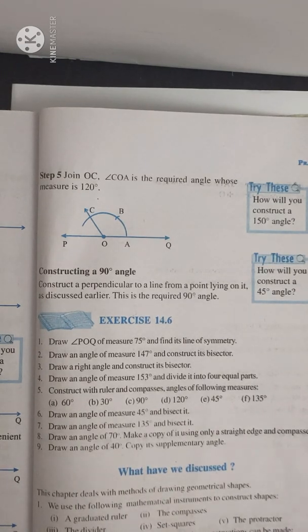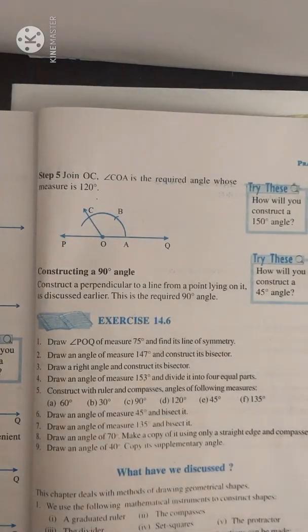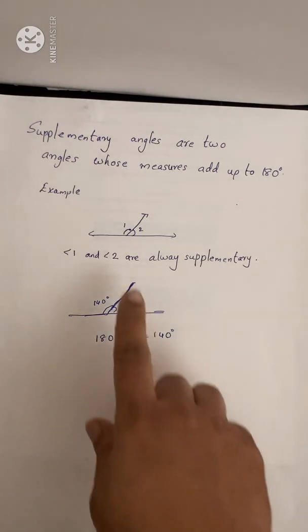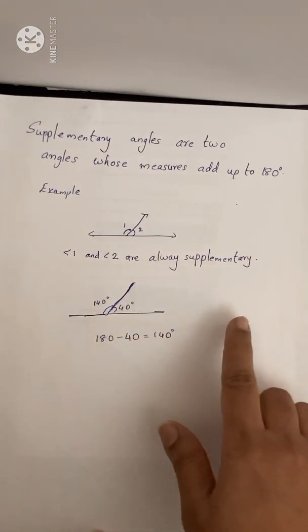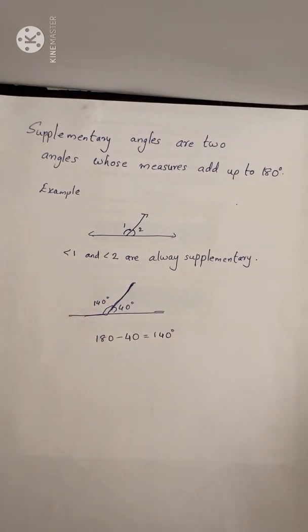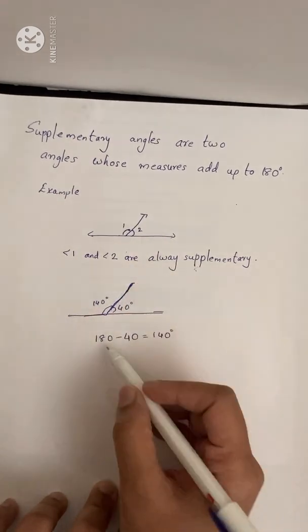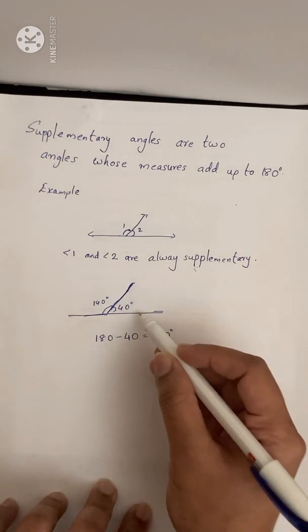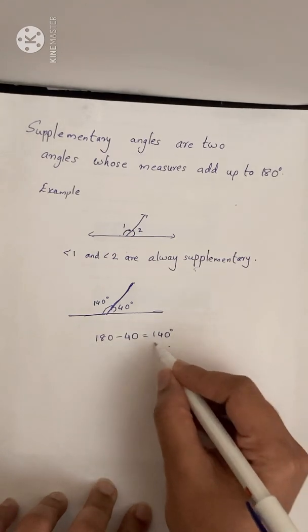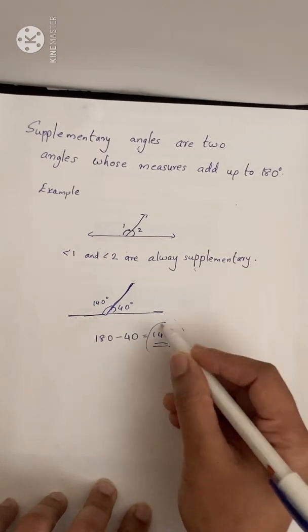In this question we have to copy the supplementary angle, not the 40 degree angle. Supplementary angle means two angles whose measures add up to 180 degrees. For example, angle 1 and angle 2 are supplementary — angle 1 plus angle 2 equals 180 degrees. To find the supplementary angle, we subtract 180 minus 40 degrees, which equals 140 degrees. So we are going to do the copy of the supplementary angle.